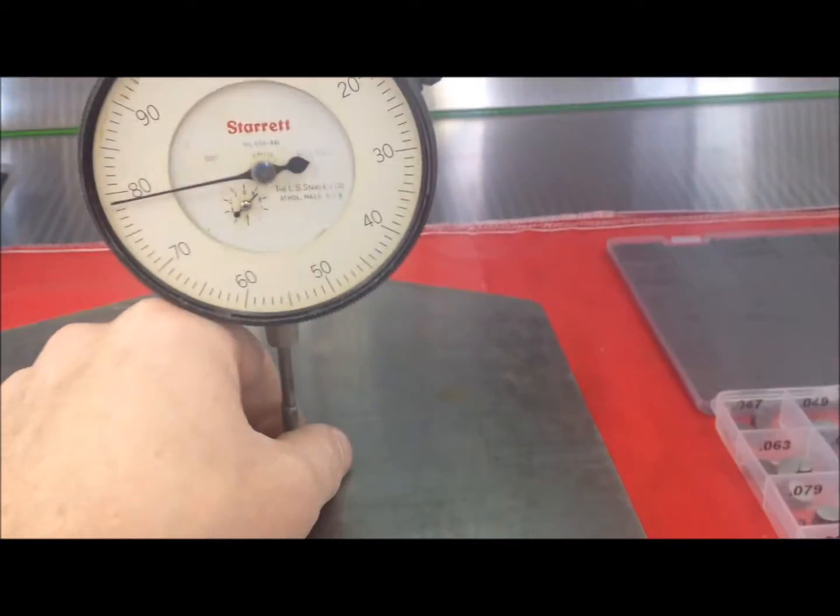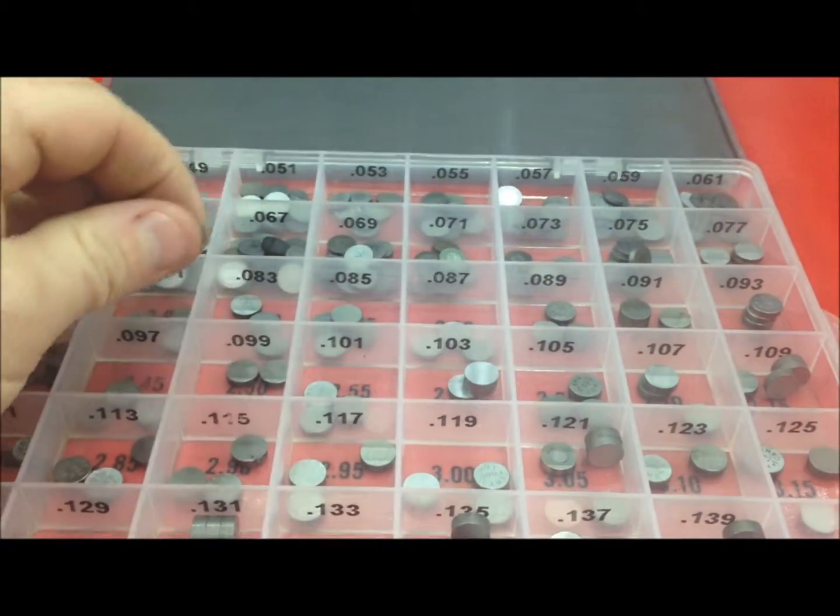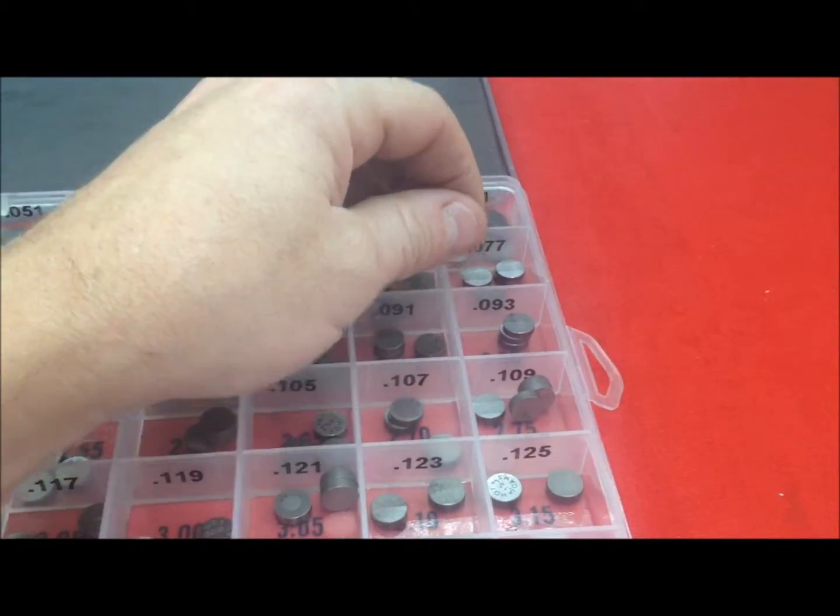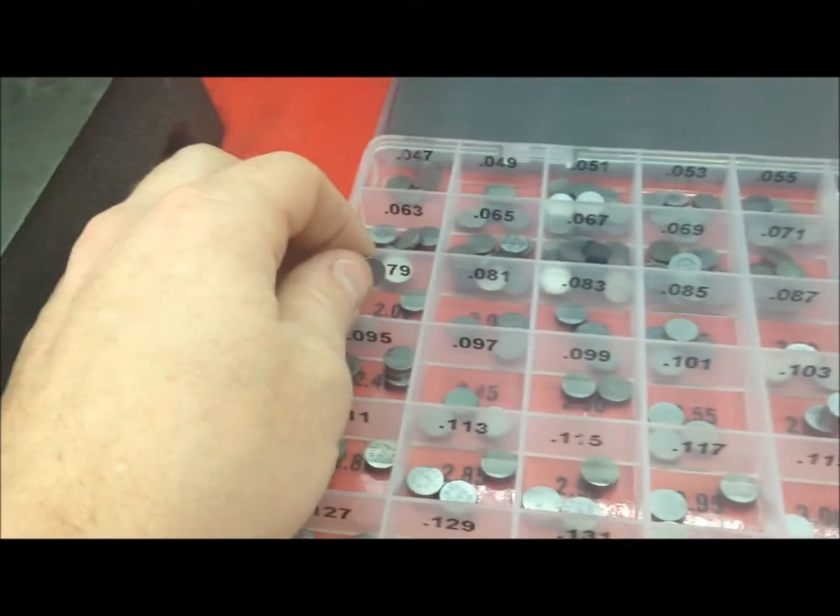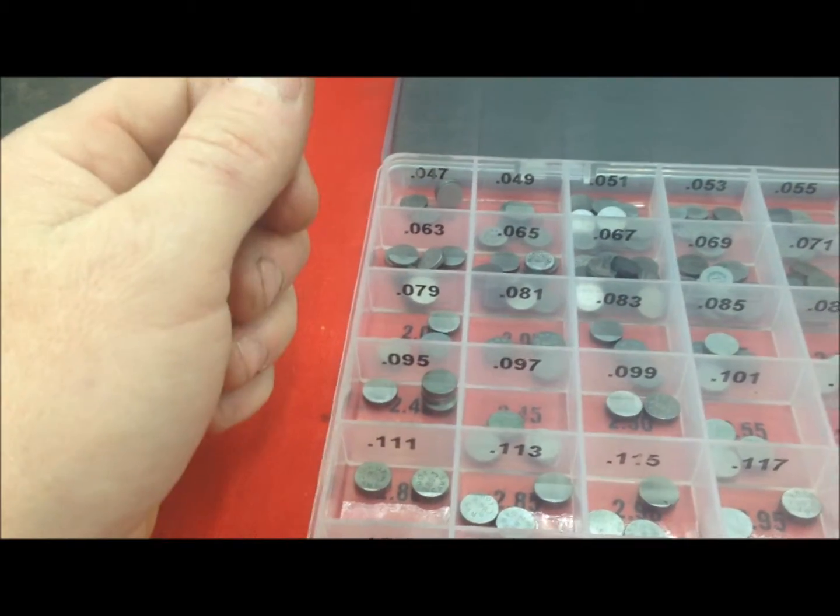And you can see this one reads 79,000. So I'm going to take the shim out, we're going to go over here, and we're going to find the 79,000, which is right here. Sorry, I'm trying to do this one handed. Drop it in there, and that's how we check our shim's thicknesses.